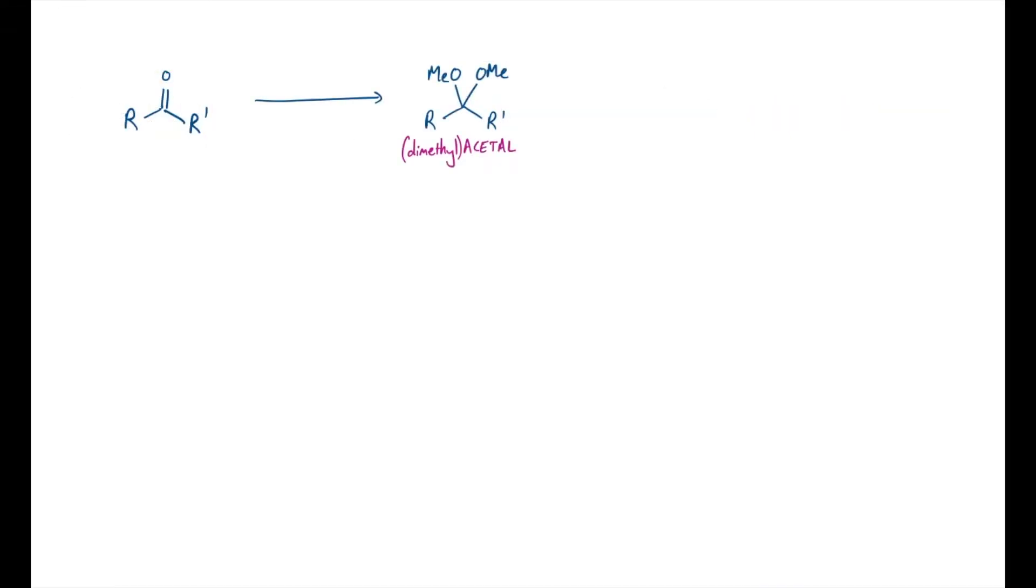This is the reaction scheme I'd like to talk through today. I'm going to start off with a carbonyl compound on the left hand side, so that could be a ketone or an aldehyde, and I'm going to form the dimethyl acetal on the right hand side.